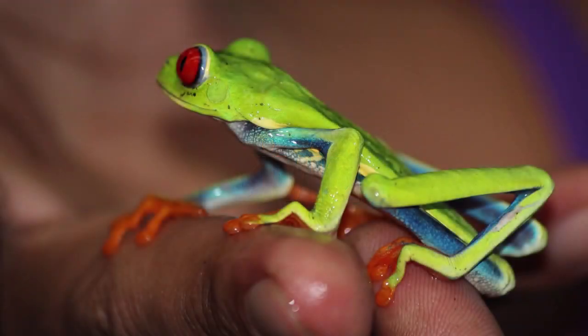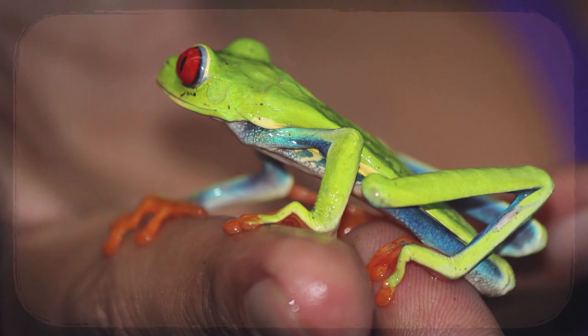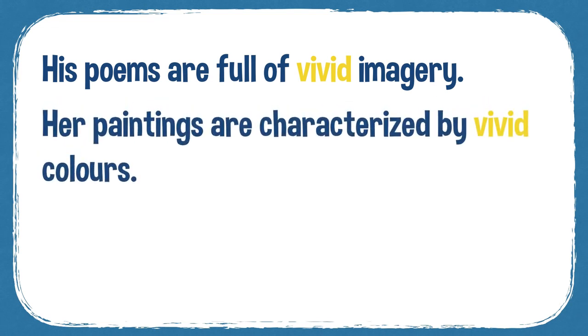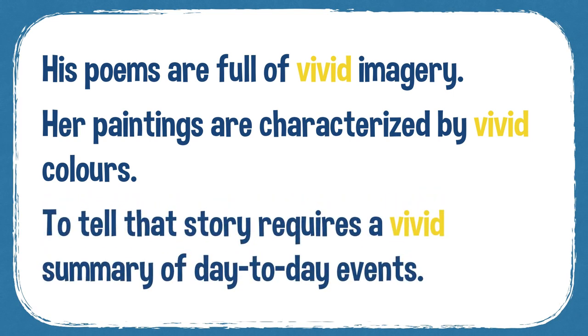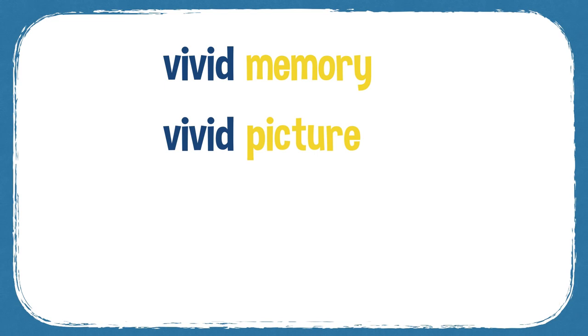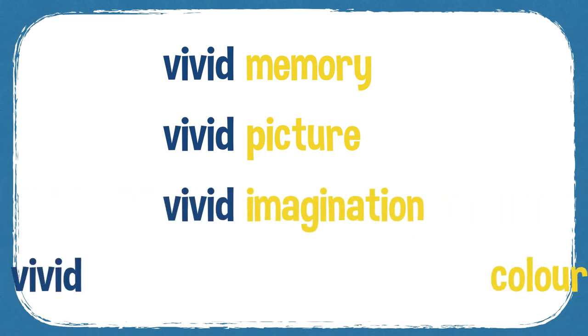The next word is vivid. If you describe memories and descriptions as vivid, they are very clear and very detailed. Colours can also be vivid if they're bright, clear, and stand out. So vivid things kind of stand out — like this frog, which has very vivid colours; it's a vividly coloured frog. 'His poems are full of vivid imagery.' 'Her paintings are characterised by vivid colours.' 'To tell that story requires a vivid summary of day-to-day events' — it needs to be detailed. You can have a vivid memory, a vivid picture, a vivid imagination, or a vivid colour.